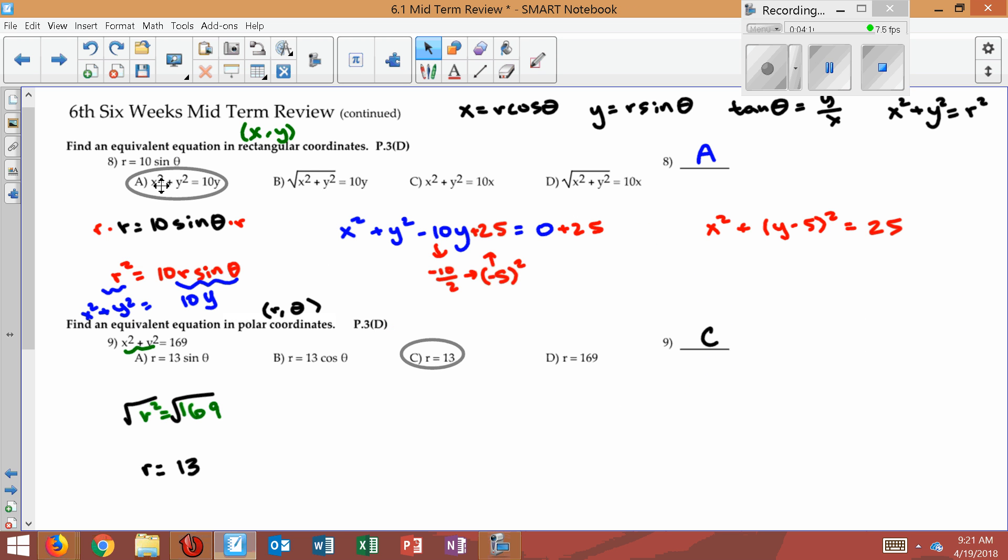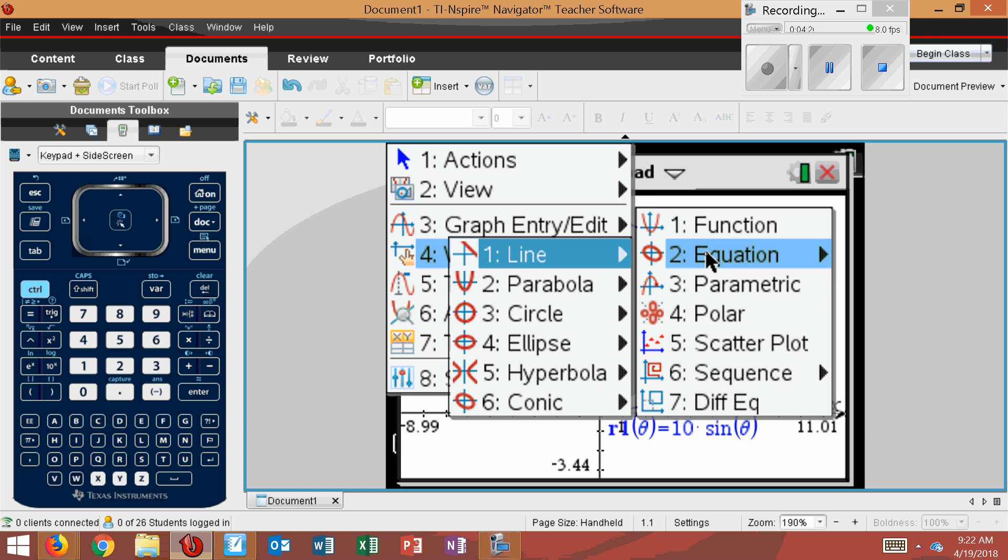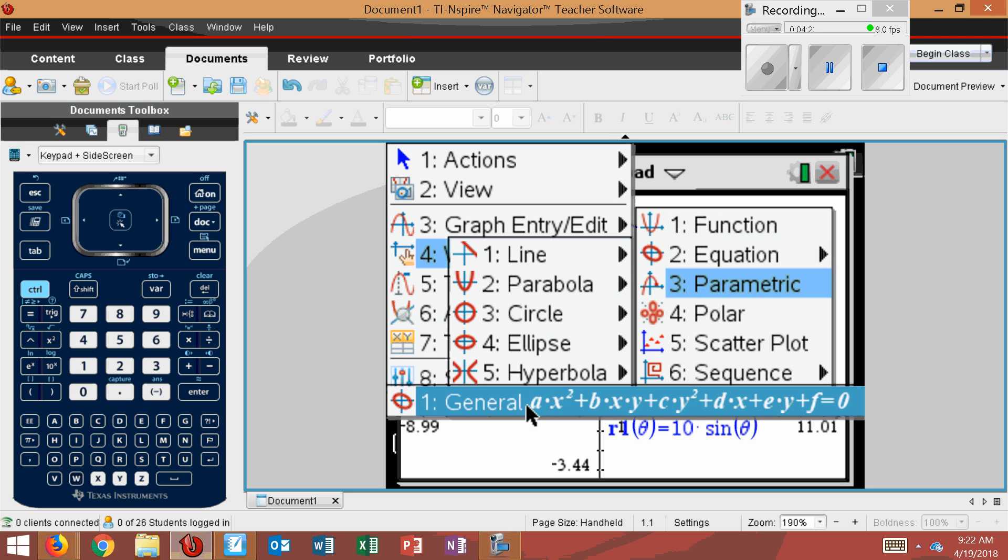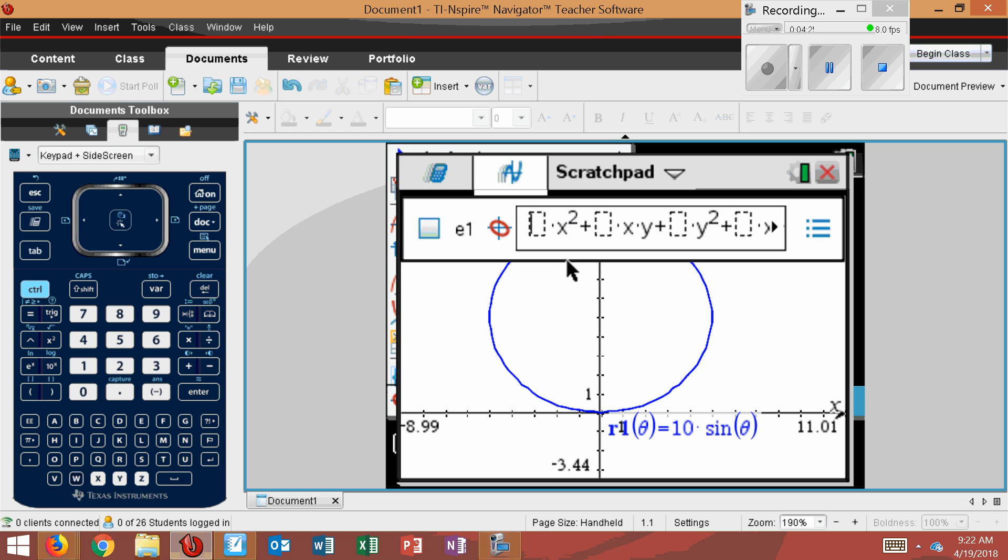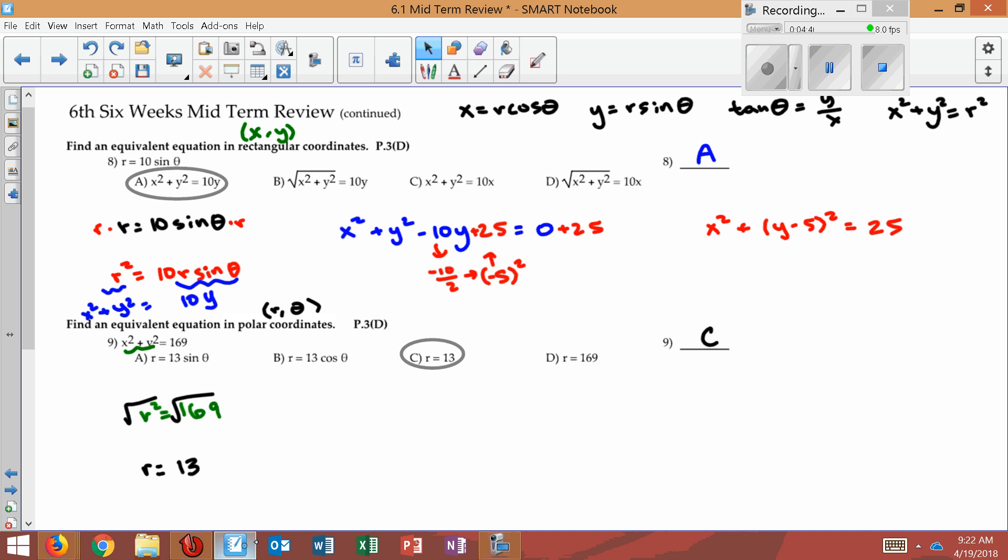Now, I want to check it to see if x squared plus y squared equals 10y is the same graph. Now, how do I do that? That was a conic section. So I can go menu, graph entry, choose equation. I'm going to go to conic and choose general. And we'll check the test or answer. Now, I'm going to type this in. We had 1x squared. We did not have an xy. We had 1y squared. No x's. But we did have a negative 10y when we moved it over. And we had nothing that was by itself. Press enter. Notice it's the exact same circle. So we did do that one correctly.